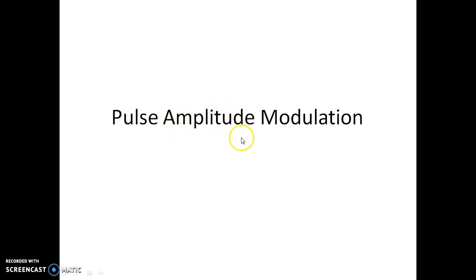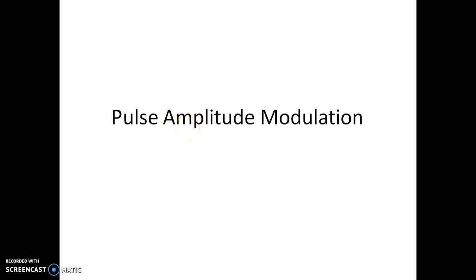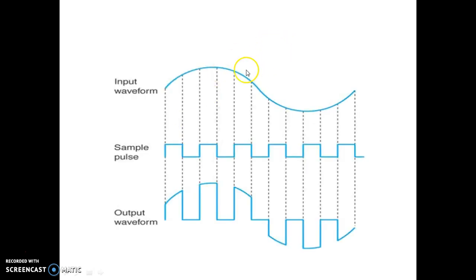Pulse amplitude modulation is an analog modulation scheme in which the amplitude of the pulse carrier varies proportional to the instantaneous amplitude of the message signal. Now let us understand this with respect to waveforms. There are two kinds of pulse amplitude modulation: one using natural sampling and one using flat top sampling.